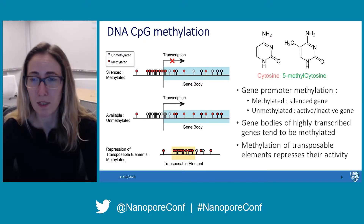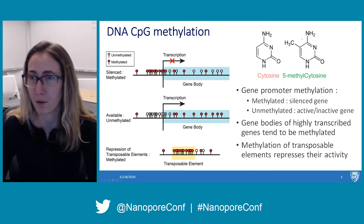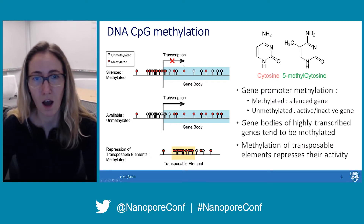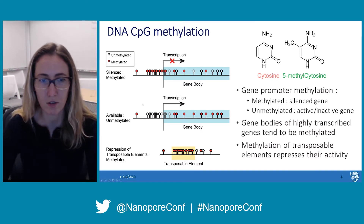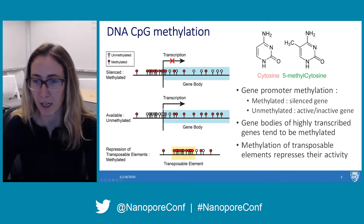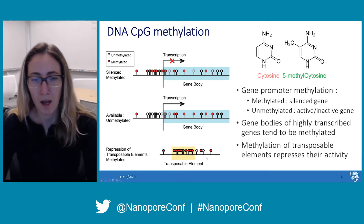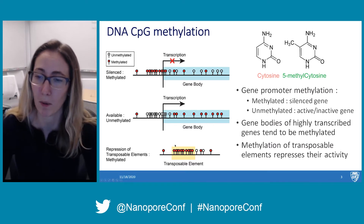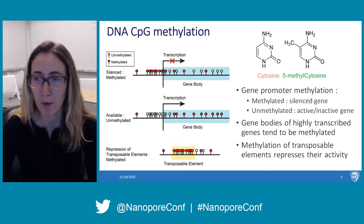Today I'll be talking mostly about DNA CpG methylation — the addition of a methyl group on the fifth carbon of a cytosine ring. We typically associate DNA CpG methylation with the silencing of transcription when we have hypermethylation in the promoter, or the activation of transcription when we have hypomethylation in the promoter and hypermethylation in the gene body. Additionally, methylation is typically associated with the repression of transposable elements, and hypermethylation in transposable elements or repetitive DNA is thought to repress its activity.